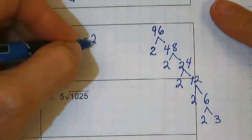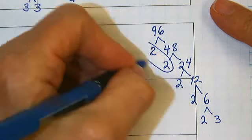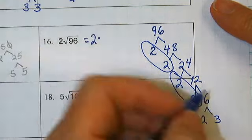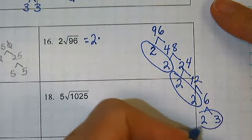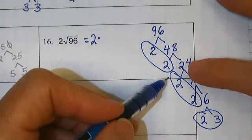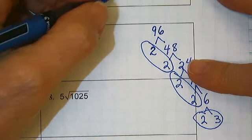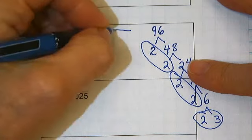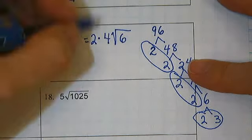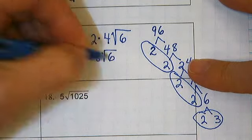So this is going to be two times, here is a four, and here is a four, and this is just a six, so our problem would be two times four times the square root of six. Two times four is eight times the square root of six.